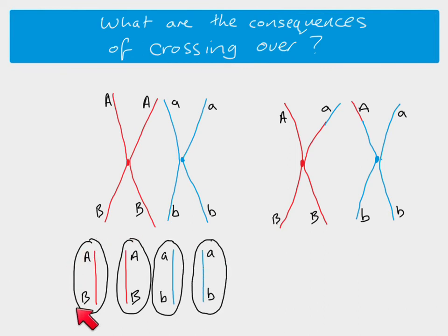This is what we would get in terms of the allele combinations if there was no crossing over. You can see that we've just got, in this example here, we've just got two different kinds of gametes. However, when crossing over has occurred, we see a difference.